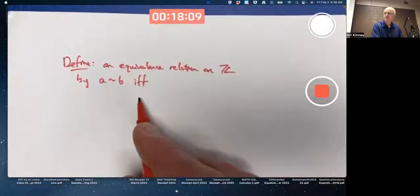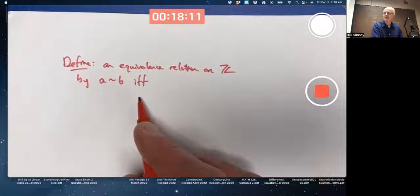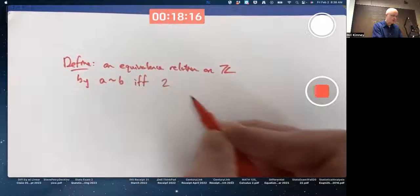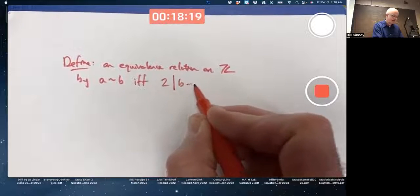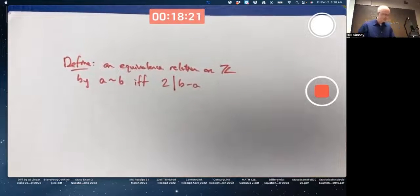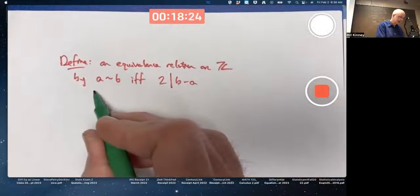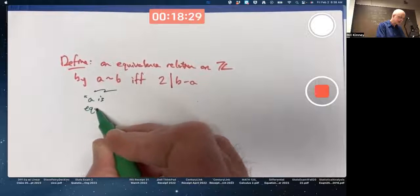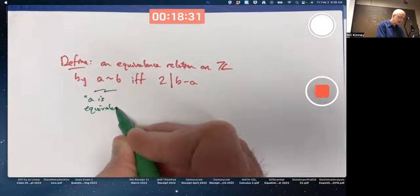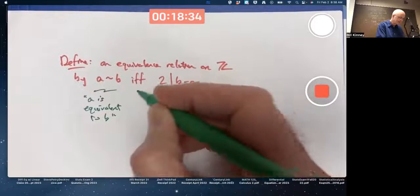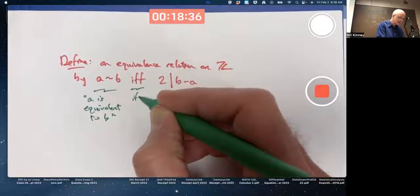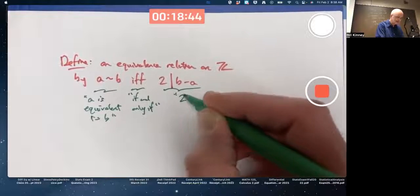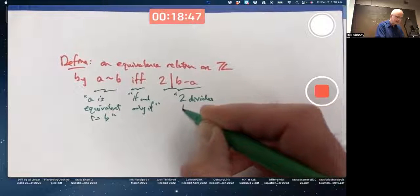That's not an official word in English, but that's a mathematician's shorthand for if and only if. If and only if two divides B minus A. So in words, this is saying A is equivalent to B. This is saying if and only if.